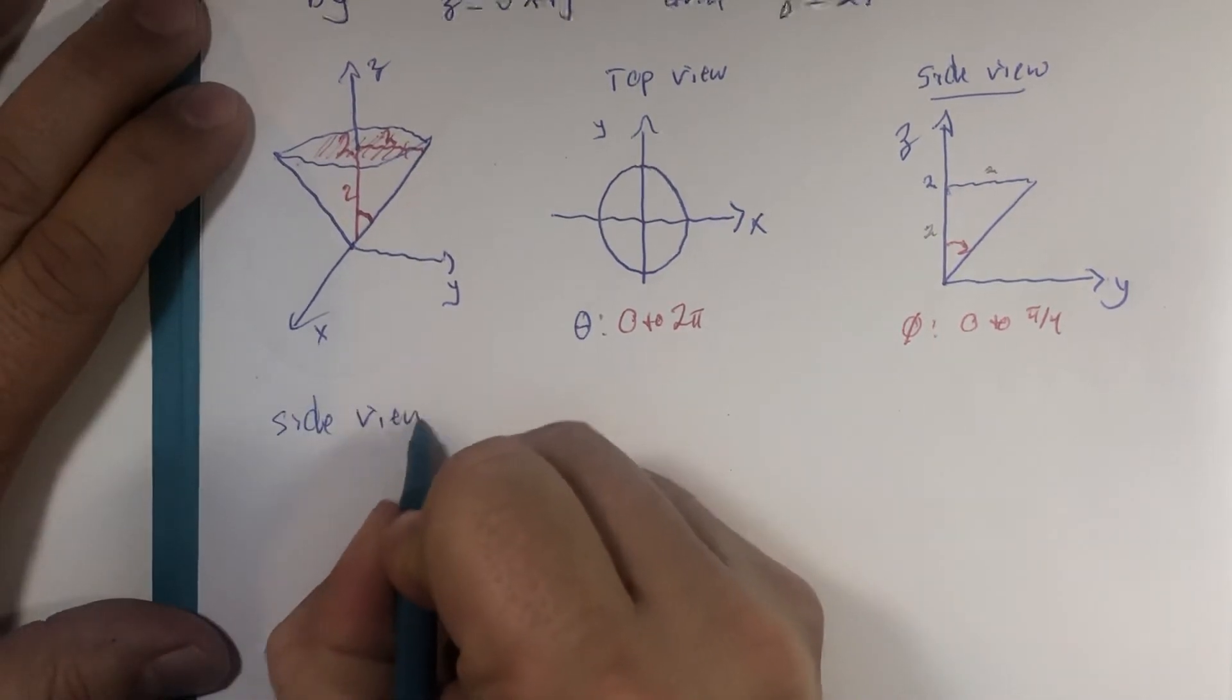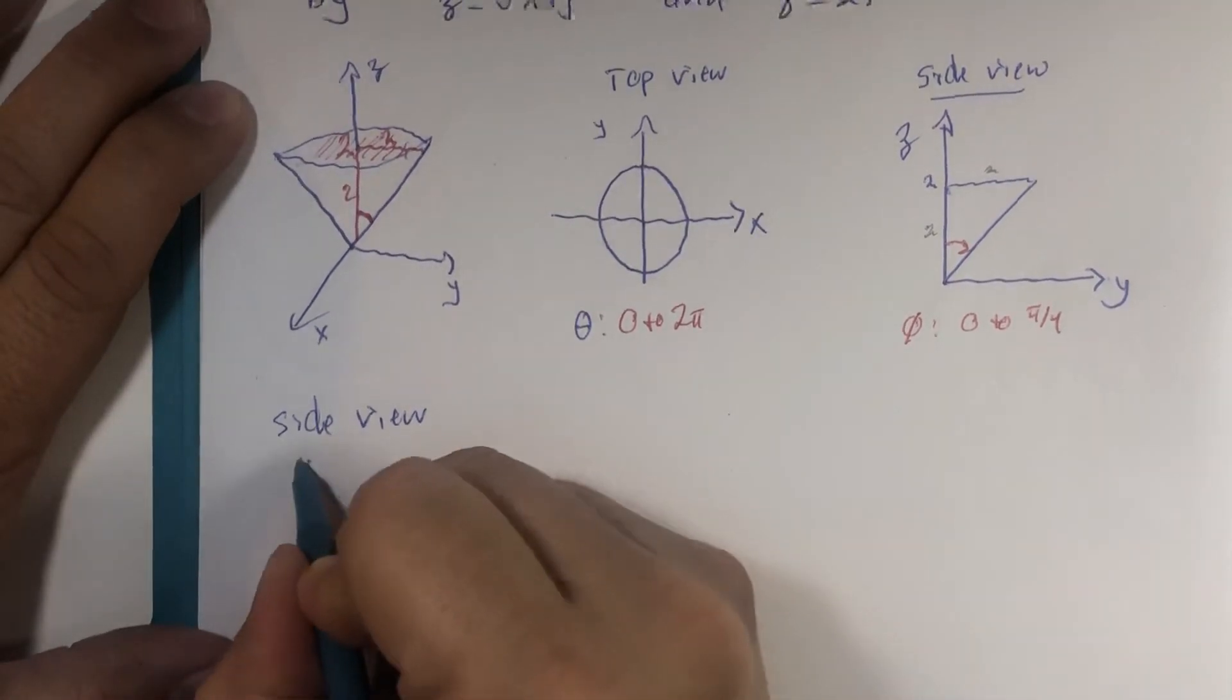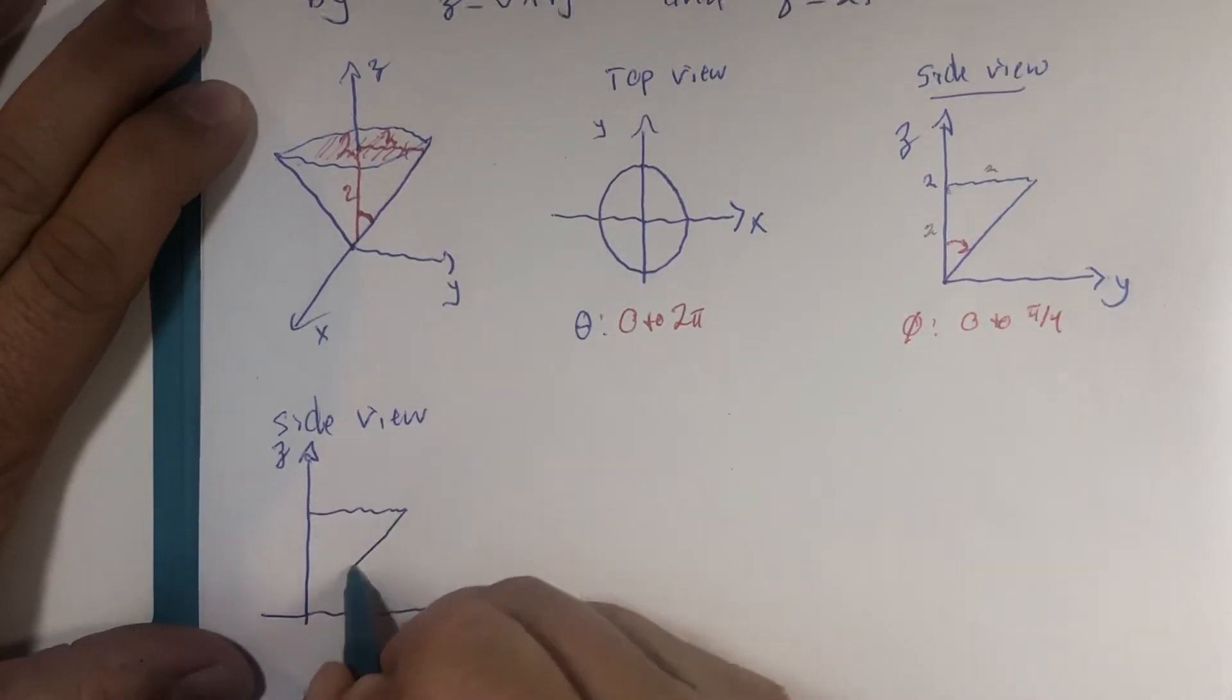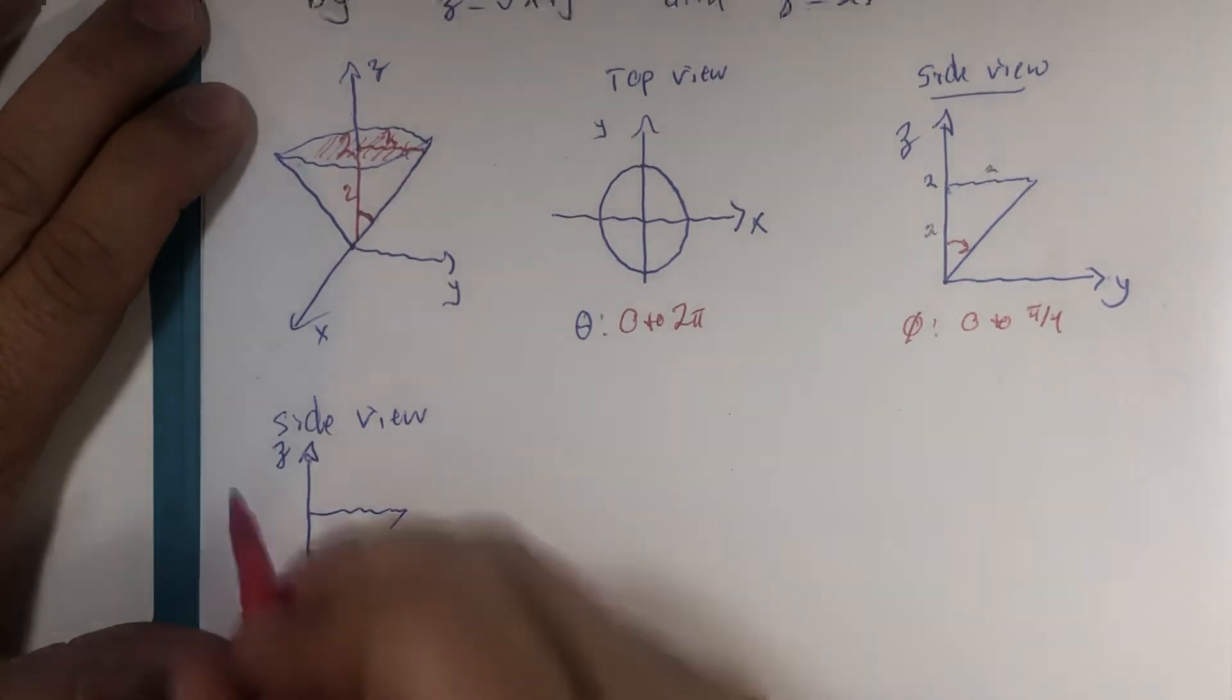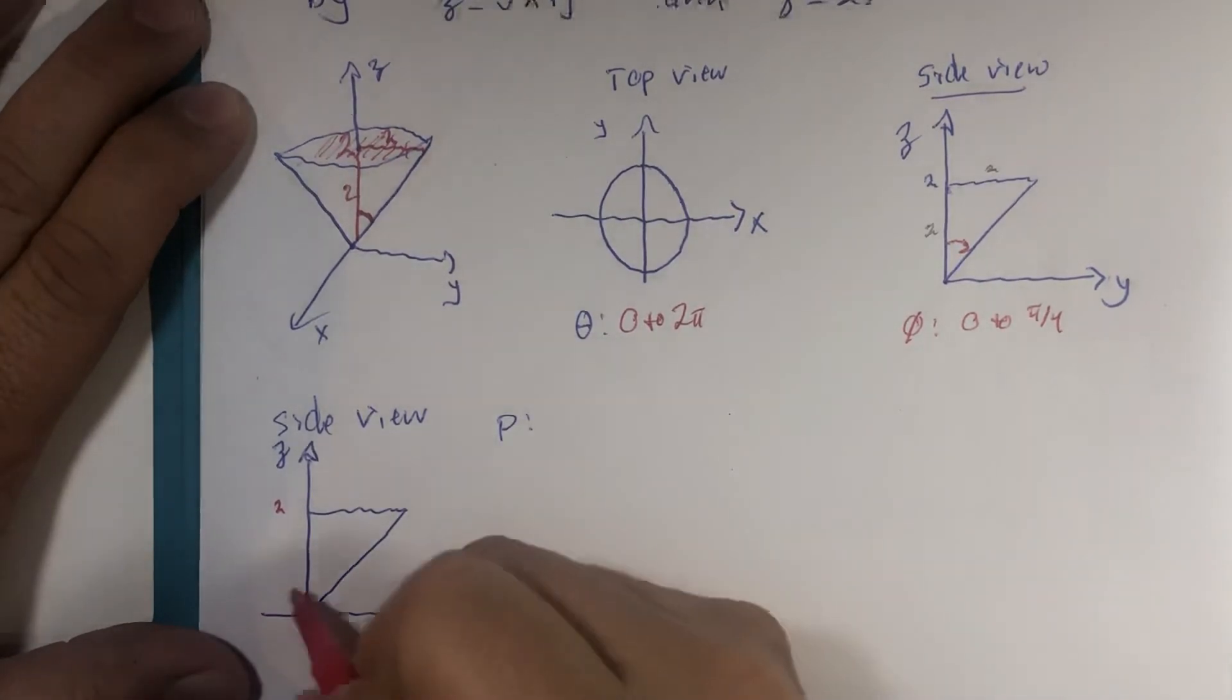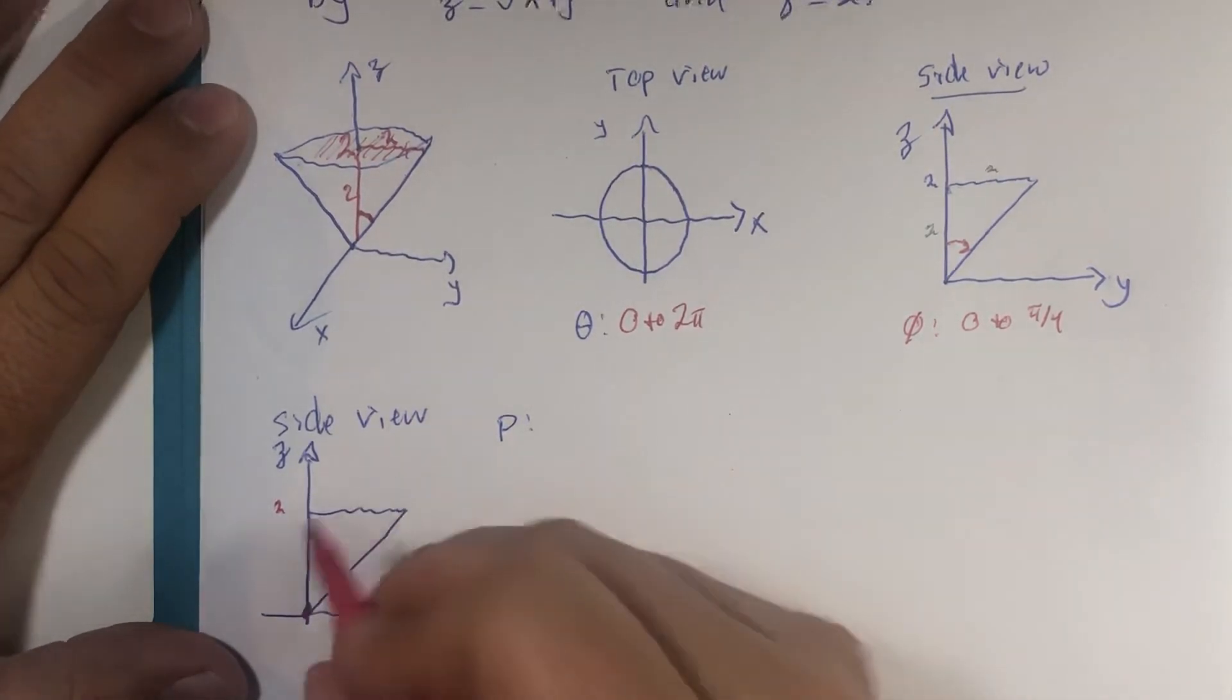Side view. Z, Y, and here's part of that cone in the first octant. I want you to note that the radius, what we call ρ, measures from the origin to the outside, farthest away from the origin points possible.